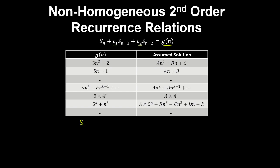So the solution to this recurrence relation is a superposition of the homogeneous solution plus the particular solution.